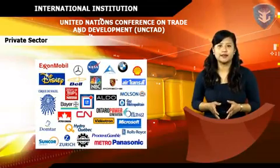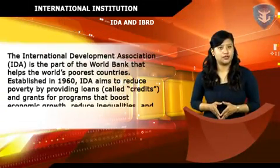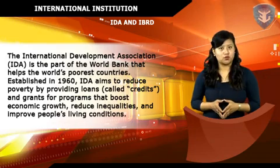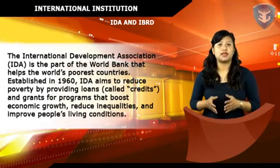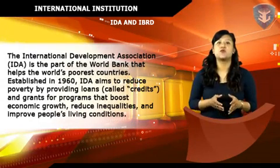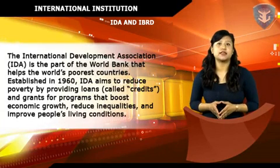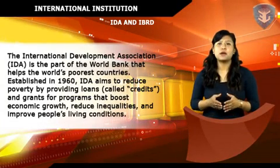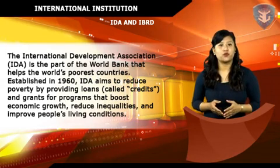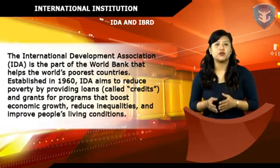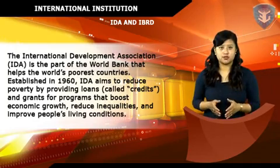IDA and IBRD: The International Development Association is the part of the World Bank that helps the world's poorest countries. Established in 1960, IDA aims to reduce poverty by providing loans — called credits — and grants for programs that boost economic growth, reduce inequalities and improve people's living conditions.